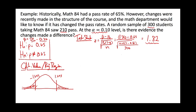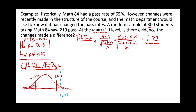Now that we have our test statistic and know the rejection region, what's our decision? Is 1.82 in the rejection region? It's above the cutoff — 1.82 is out in the tail beyond the cutoff — so yes, it is in our rejection region.